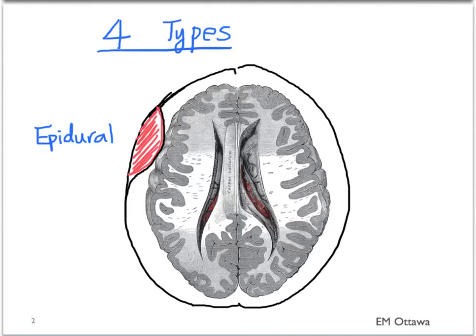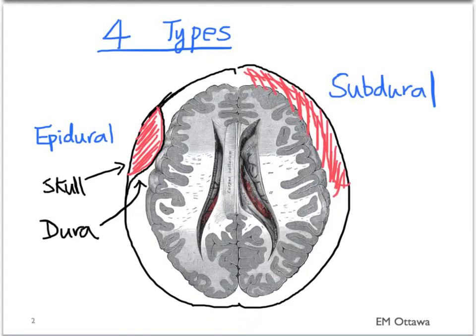The first type is an epidural hematoma, where the blood is between the skull and the dura. The second type is a subdural hematoma, where the blood is underneath the dura.